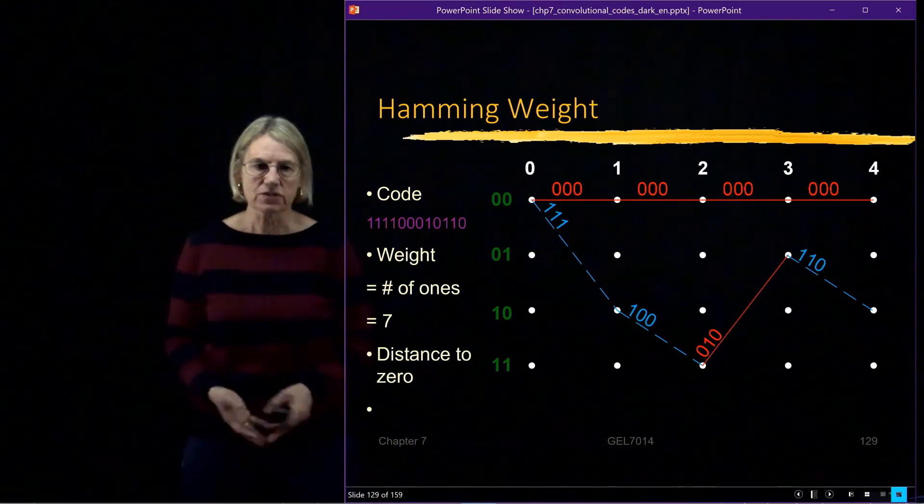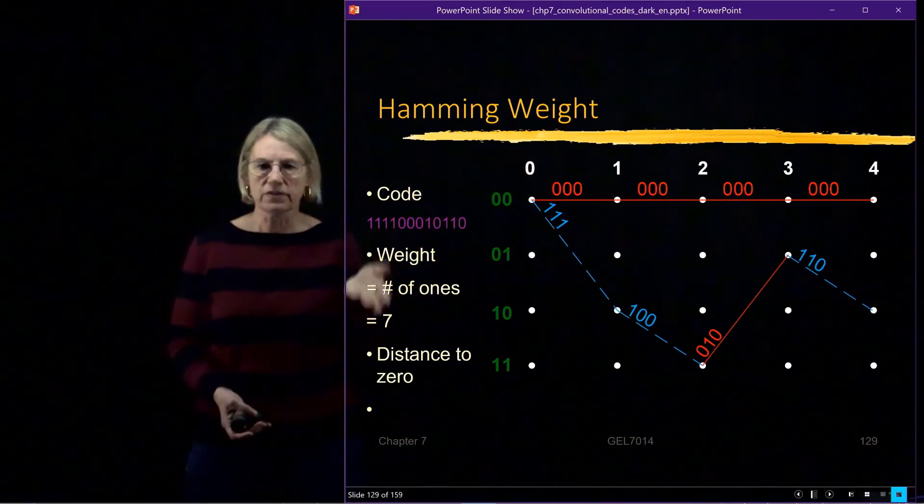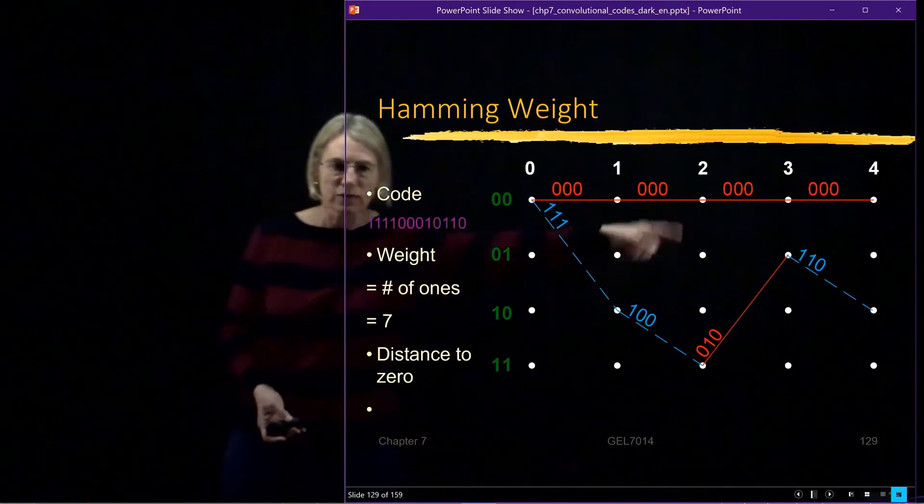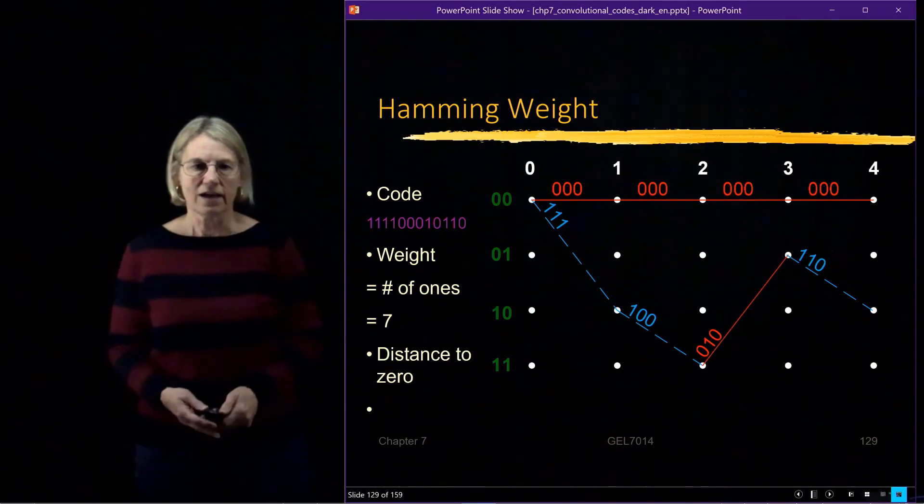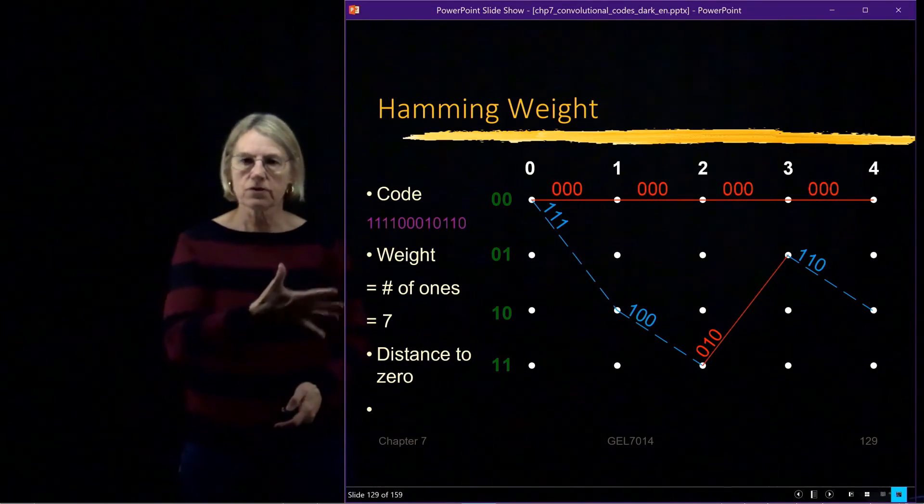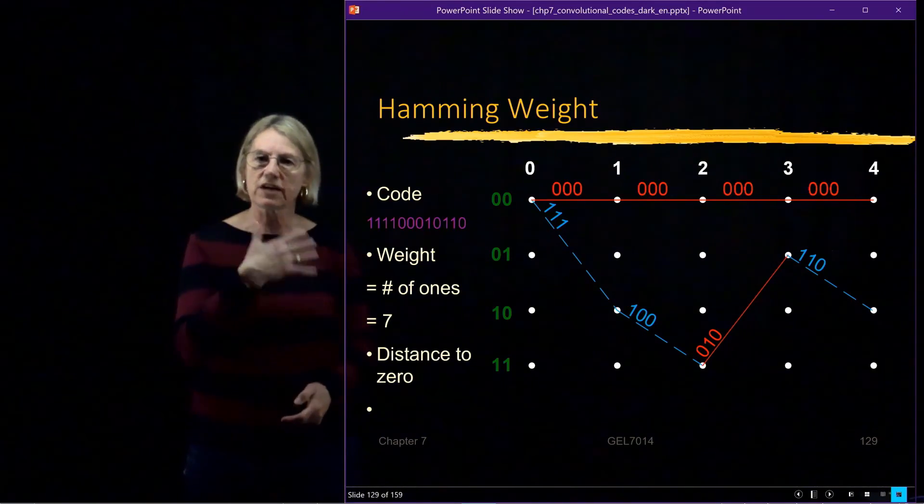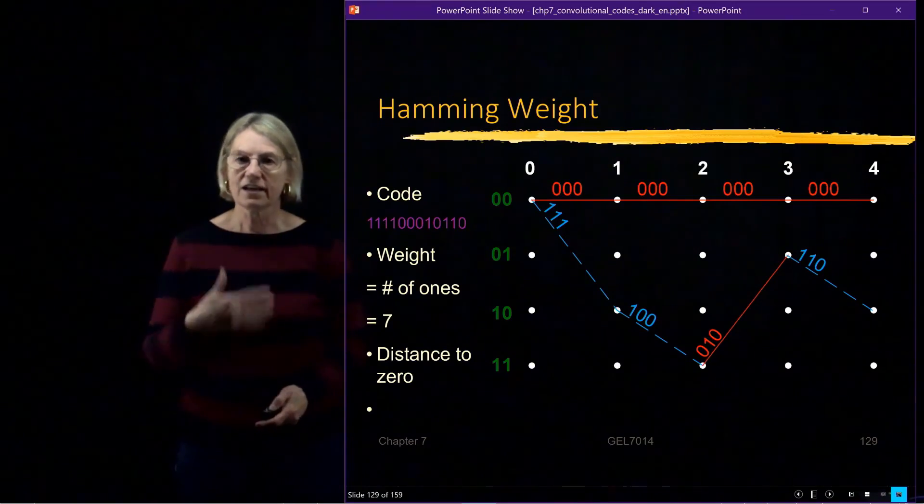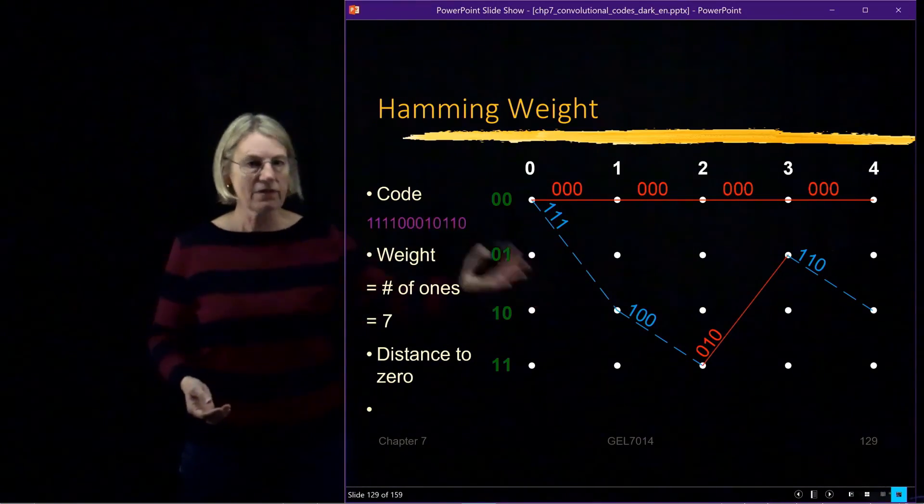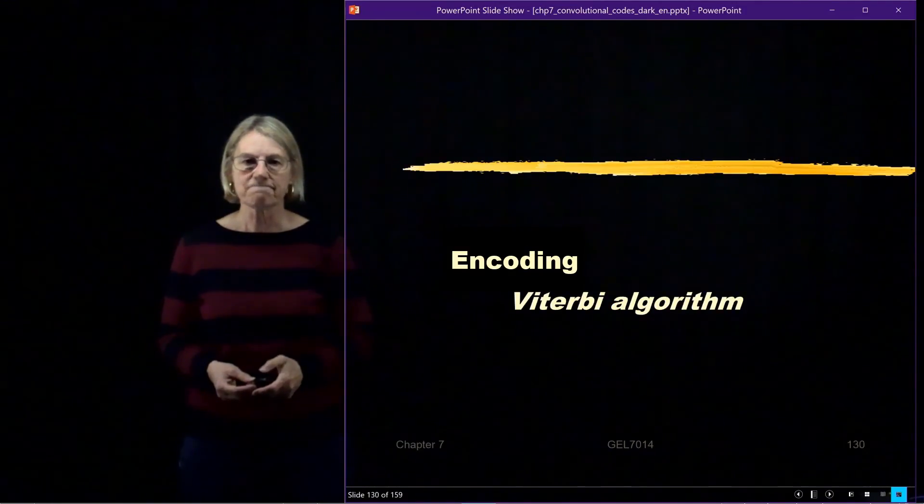So if I were to ask the question, what is the distance between this path and the all 0 path? Well, that would just be the weight. But of course, this one doesn't actually go back to the state A yet. But just in terms of definitions to help you in answering questions on the exams, different kinds of questions that could be asked. This would be an example given the path. What's the weight? What's the distance to the all 0 states, etc.